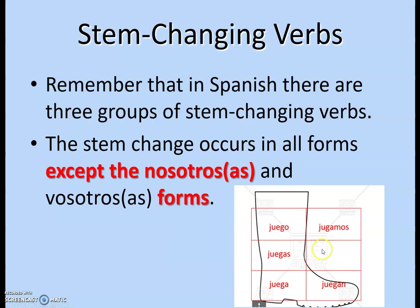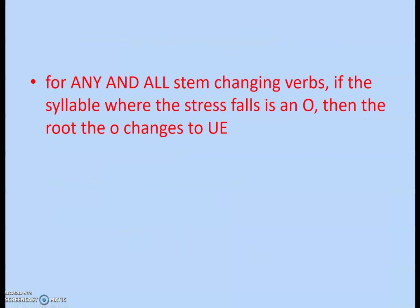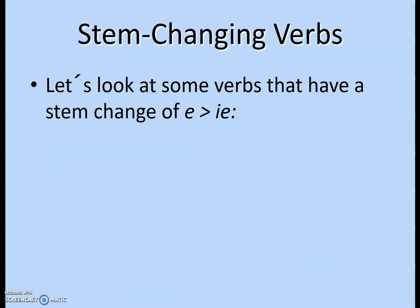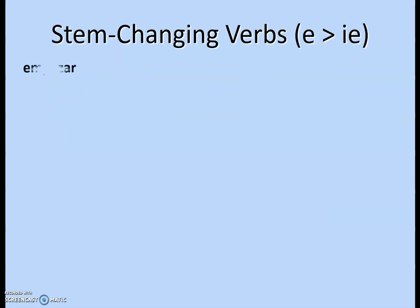We don't use the vosotros form in our Spanish classes, so that box is blank. You can see the nosotros form is left out of the boot. The verb jugar gets a stem change everywhere inside the boot, but not outside. For O to UE verbs: if the syllable where the stress falls is an O, the root changes from O to UE. You just have to memorize the E to IE and E to I verbs because there's no single rule.